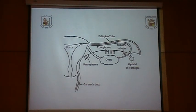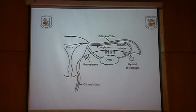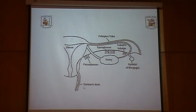Regarding remnants of the Wolffian duct, due to the absence of testosterone they sometimes form remnants in the broad ligament known as the epoöphoron and hydatid cysts of Morgagni, and the paroöphoron, which are small vestigial tubules found in the broad ligament. Sometimes a Gartner's duct can form, which may form a cyst in the inguinal region — these are vestigial remnants of the Wolffian system.